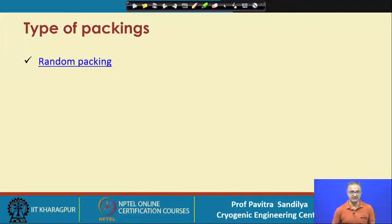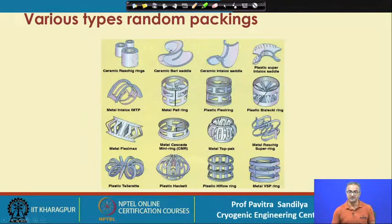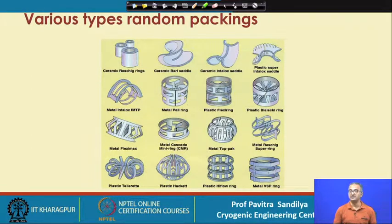There are two types of packings: random packing and structured packing. Random packings come in small individual pieces that are randomly placed in the packed bed. There are different types such as Raschig rings, Berl saddles, Intalox saddles, and so forth — proposed by different researchers and industries, some proprietary in nature. All these packings are differentiated in terms of the surface area they offer and the pressure drop they create, which is a very important consideration. Depending on the particular case, we choose a particular type of packing.